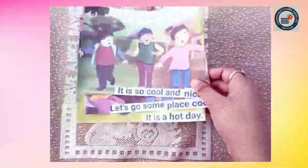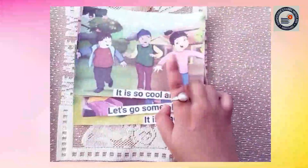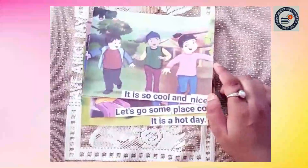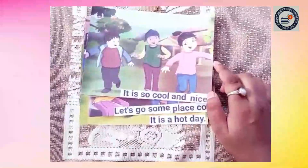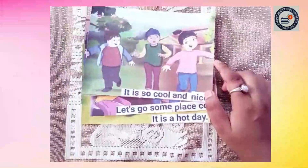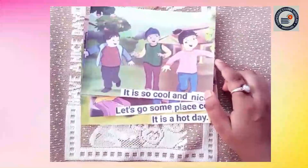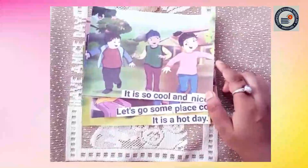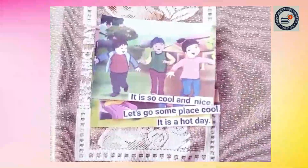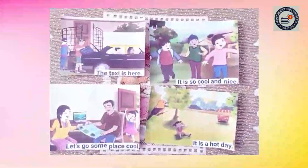So children, now I am going to shuffle this flash card, and we will arrange it in the right order. So now let's shuffle the flash card and I will place it on this table. Children, I have shuffled the flash card here.